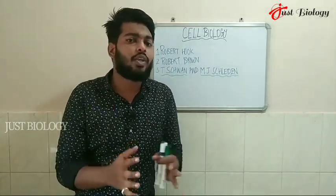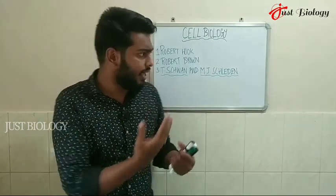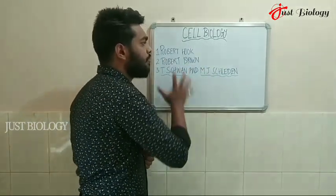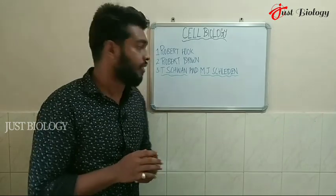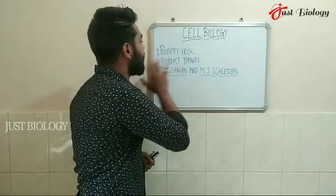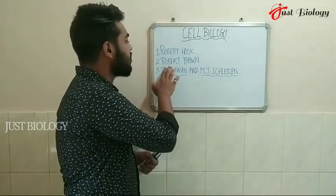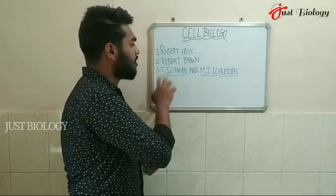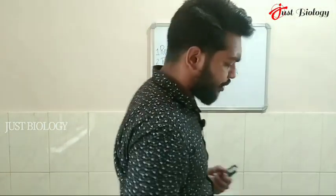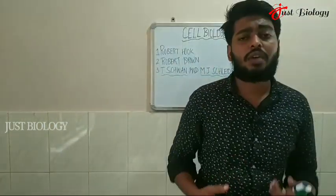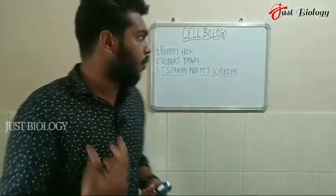Whenever you open a cell biology book, you may start with a few scientists' names — scientists who appear since the first page. The first person is Robert Hooke, the second is Robert Brown, and the third are Schwann and Schleiden. Let's discuss their contributions to cell biology.